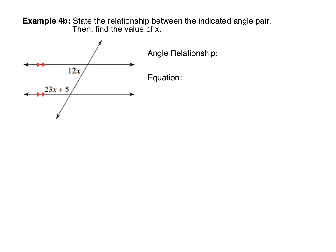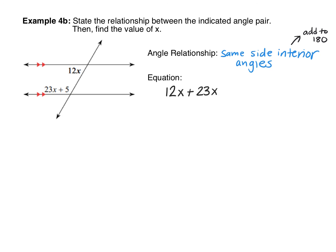In the next example, the two marked angles are both interior angles, but this time they're on the same side of the transversal — making these same-side interior angles. Be careful: same-side interior angles are not congruent; they are supplementary, meaning they add to 180 degrees. So instead of setting them equal, we add the two expressions together and set the sum equal to 180: 12x plus 23x plus 5 equals 180.